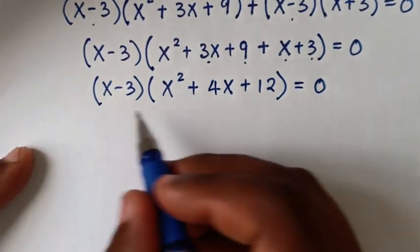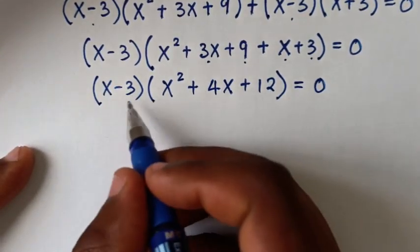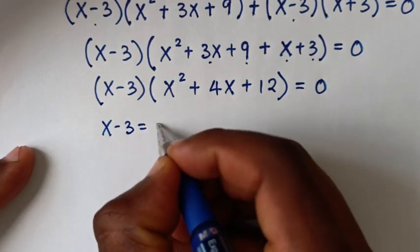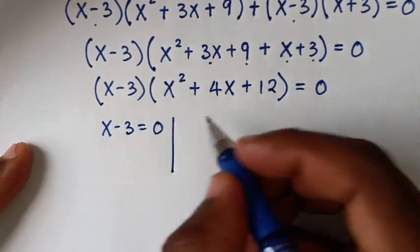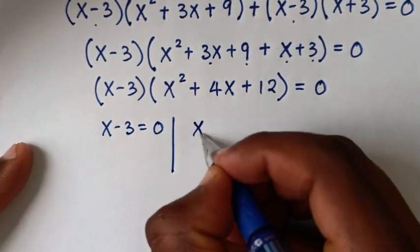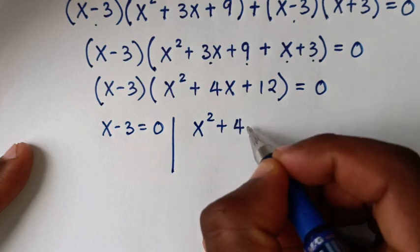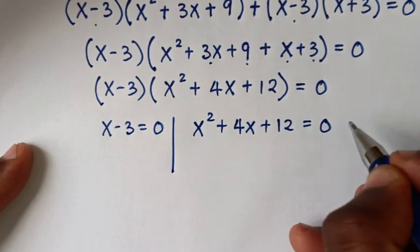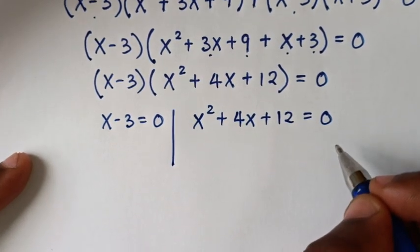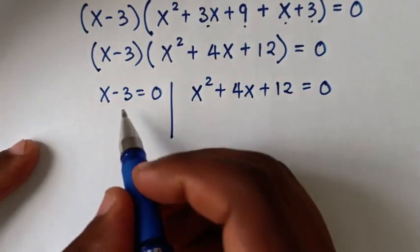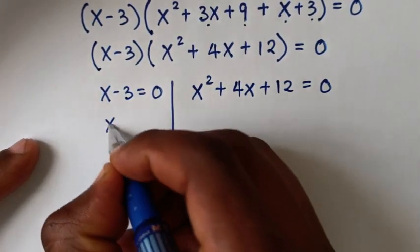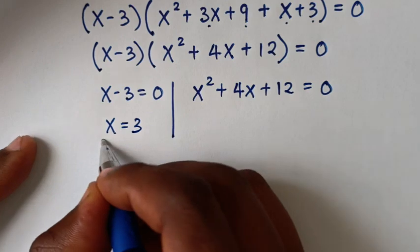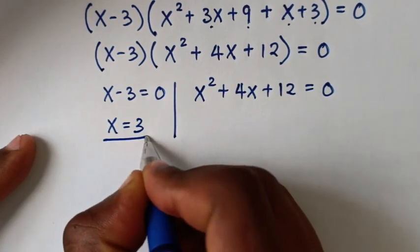Then from here, we'll have two solutions. The first solution is x minus 3 is equal to 0, and the second solution is x squared plus 4x plus 12 is equal to 0. From the first solution, we'll take negative 3 to this side, so it will be x is equal to 3, so this is the first value of x, which is the real solution.